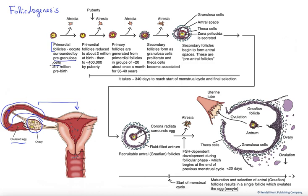There are about five to seven million of them developed pre-birth, but they undergo dramatic atresia. This is a programmed cell death that results in dropping that number of primordial follicles down to about two million. At birth we continue the process of atresia and reduce that number further to less than half a million by puberty.